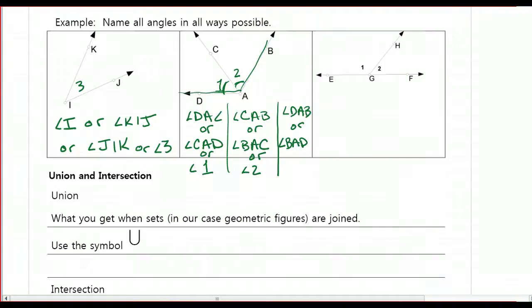Moving on to the next example. We've got this angle that looks like a straight line. It's called a straight angle. And we have three different angles here. Let's talk about angle 1 first. We could call it angle 1, or we could call it angle EGH, or we could call it angle HEG.